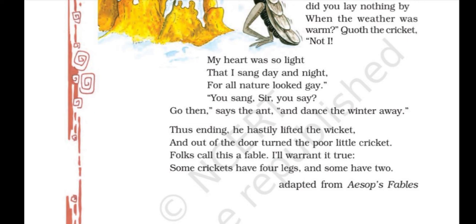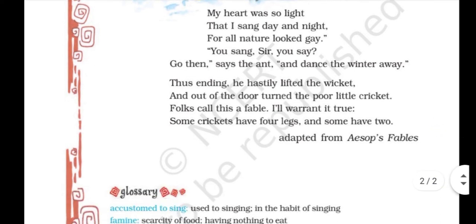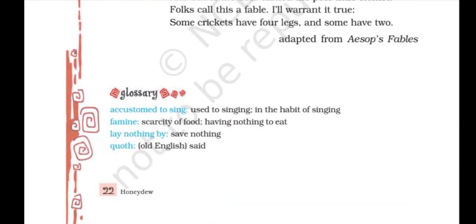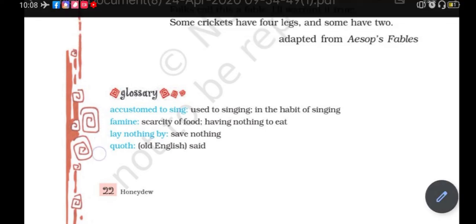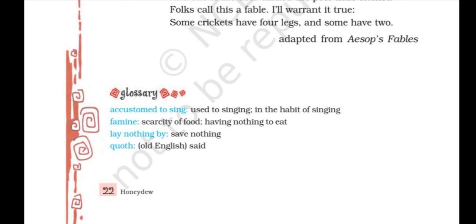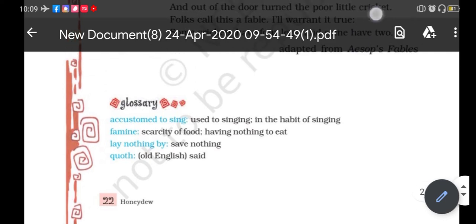Alright, so kids, this was your poem and I hope aapko yeh samajh mein aayi hogi, aur aap iska moral samjhe honge. Now, what you have to do is — in about 50 words, zaada nahi, just about 50 words, aapko iska moral likhna hai apni language mein — ki yeh poem hume kya convey karne ki koshish kar rahi hai. You'll do it in your literature copy. And there are also some word meanings here — these word meanings, you'll write in your copy. First you'll write word meanings, then you'll write the moral of this poem. And next we'll be doing question and answers — so that is all for today!